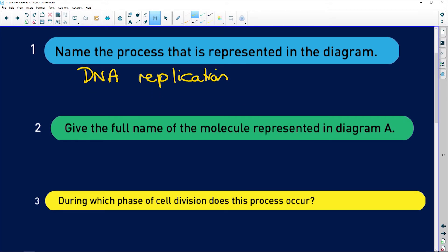Give the full name of the molecule represented in diagram A. The full molecule is deoxyribonucleic acid. Every learner on the planet knows DNA and RNA, but they don't know what it stands for, and we expect you to know that in matric. Deoxyribonucleic acid is DNA, and ribose nucleic acid is RNA.